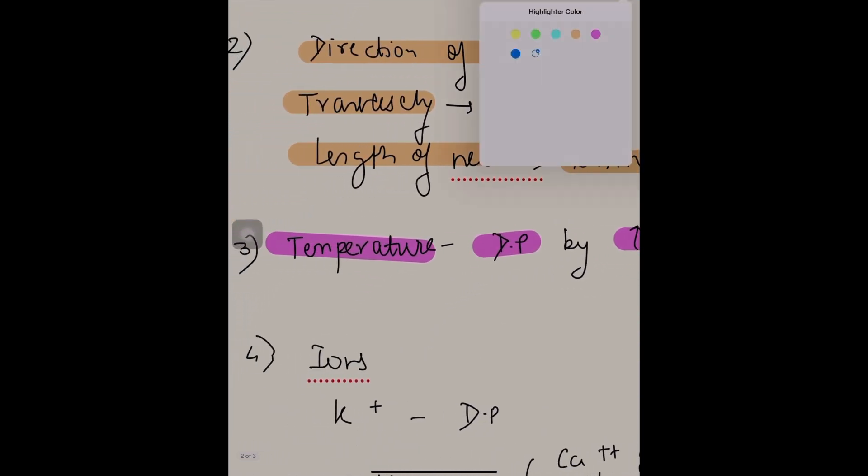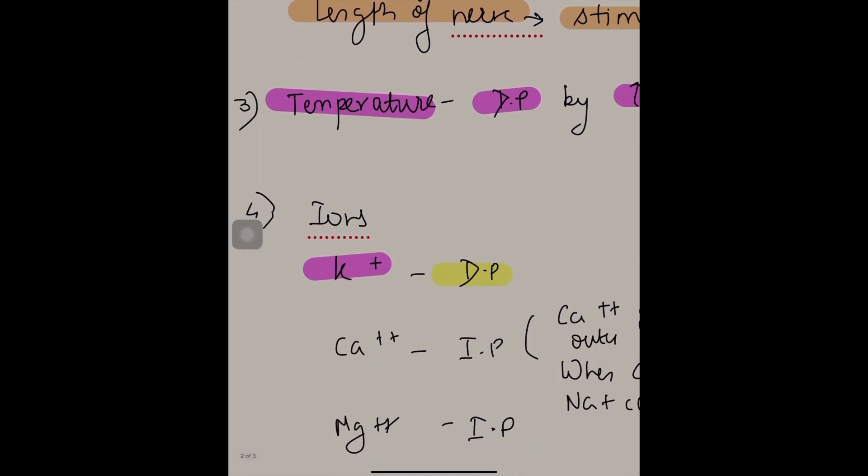Now let us go to the different ions. Let's see how they help in excitability. We start with potassium. Potassium is directly proportional. That means more the potassium, more the excitability, and less the potassium, less the excitability.